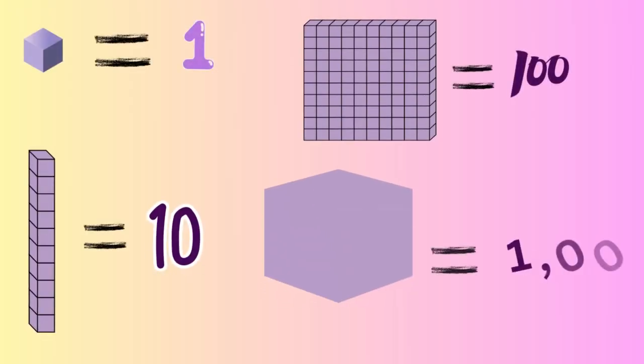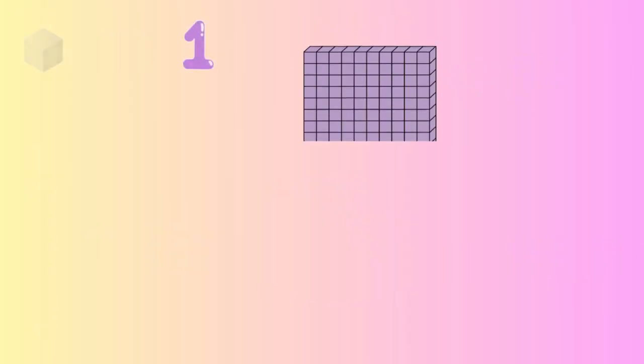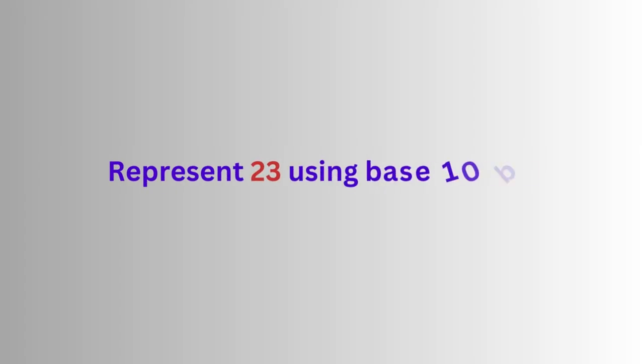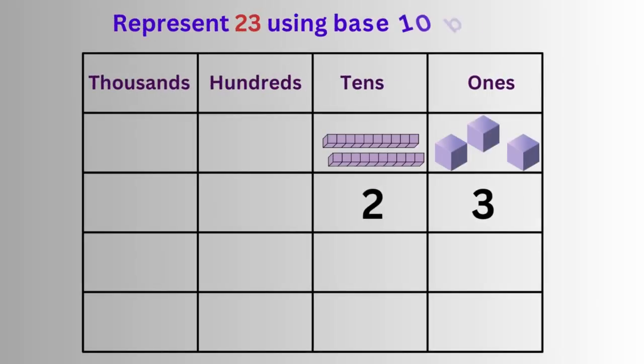Now, let's represent a number using these base 10 blocks. For example, let's say we want to represent the number 23. To represent this number using base 10 blocks, we start from the left and move to the right. In the 10s column, we have two 10s, which means 20, so we place two longs.